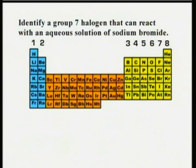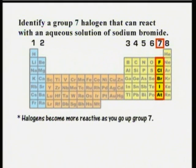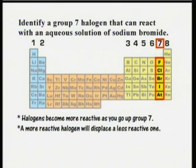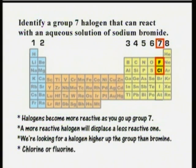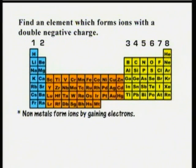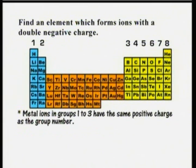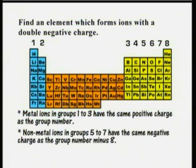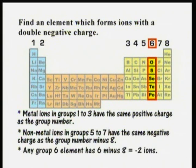Identify a group 7 halogen that will react with an aqueous solution of sodium bromide. The halogens become more reactive as you go up group 7, and a more reactive halogen will displace a less reactive one from a solution of its salt. So we're looking for a halogen that's higher up the group than bromine — that's either chlorine or fluorine. Find an element that forms ions with a double negative charge. Non-metals form ions by gaining electrons; metals form ions by losing electrons. Metal ions in groups 1 to 3 have the same positive charge as their group number. Non-metal ions in groups 5 to 7 have the same negative charge as their group number minus 8. Therefore, any group 6 element has 6 minus 8, that's negative 2 ions.